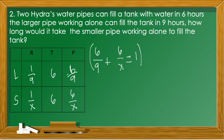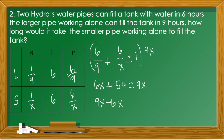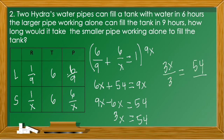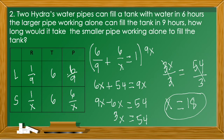The parts completed are 6/9 and 6/x, and their sum equals 1: 6/9 + 6/x = 1. Multiplying both sides by the LCD 9x gives: 6x + 54 = 9x. Rearranging: 9x − 6x = 54, so 3x = 54, and dividing by 3 gives x = 18. The smaller pipe working alone can fill the tank in 18 hours.